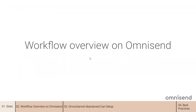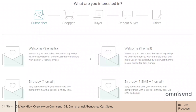Now we can go into the different automations that we have on Omnisend. If you have your Omnisend account, you can go into the automation tab and click 'New Workflow.' You will see a selection of different automation workflow presets, built for particular events that happen on your store. The first group is subscribers. Welcome automation is designed to greet your customers who just signed up via the signup forms on your store.